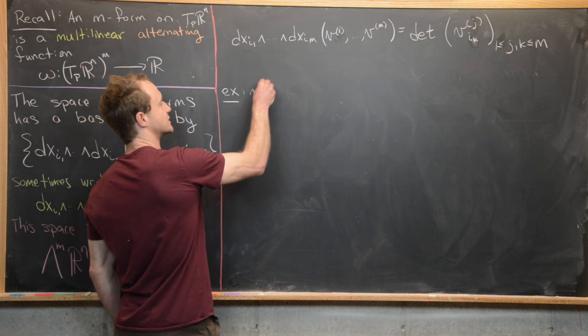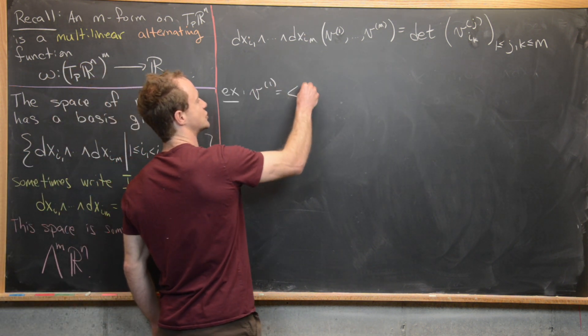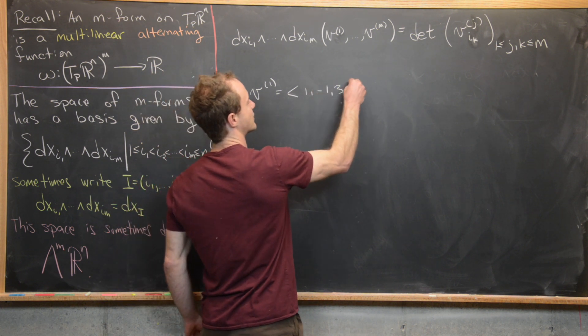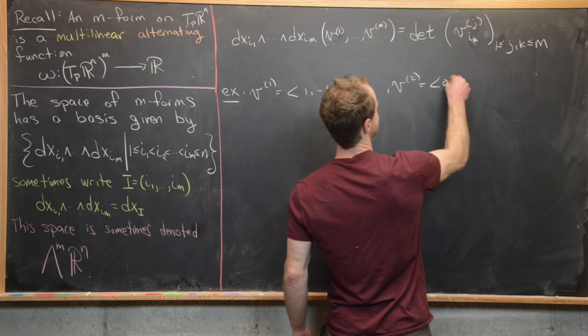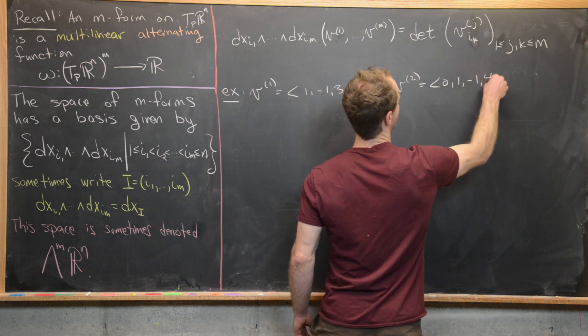Let's say we've got two different vectors, so maybe V1 is equal to (1, -1, 3, 5). And then let's say that V^2 is equal to (0, 1, -1, 4).